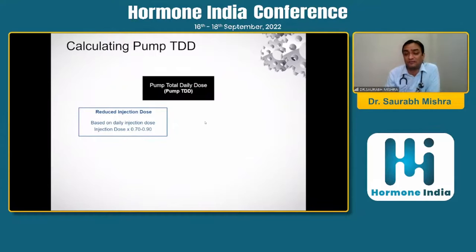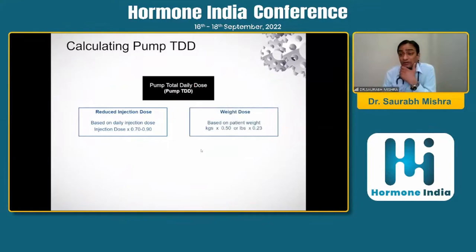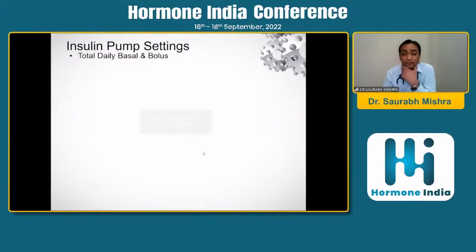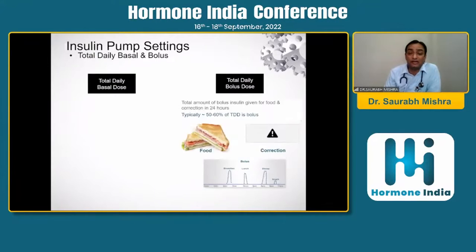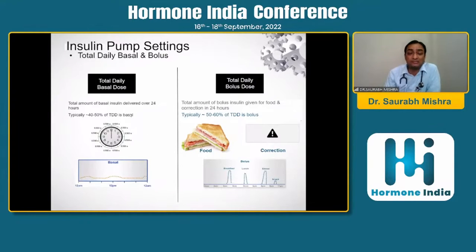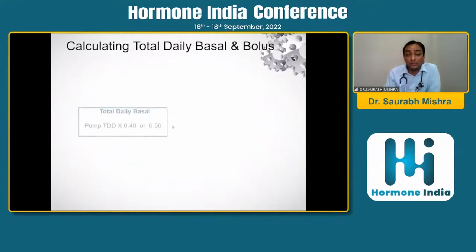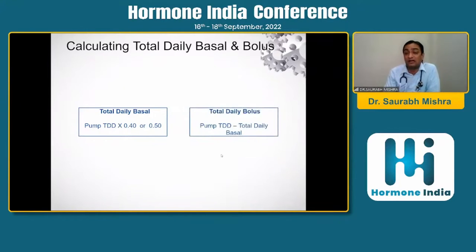For people where we don't have an exact MDI value, we can use the weight-based formula: 0.5 multiplied by weight in kg to calculate the daily dose. This total daily dose — comprising basal and bolus — must be carefully split. Basal will comprise 40 to 50% of the total daily dose; the rest is bolus. So: pump total daily dose × 0.4 or 0.5 = total daily basal, and total daily dose minus total daily basal = total daily bolus.